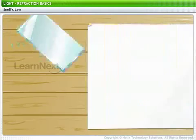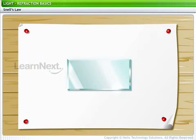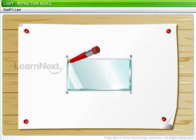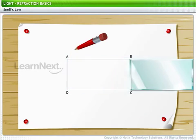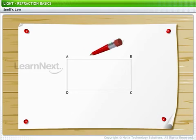Snell's Law can be verified through an experiment using a glass slab, a white paper and some pins. For this experiment, we put a glass slab ABCD on a white paper and fix this paper on a wooden board. Next, we mark the boundary of the glass slab with a sharp pencil and then remove the slab.